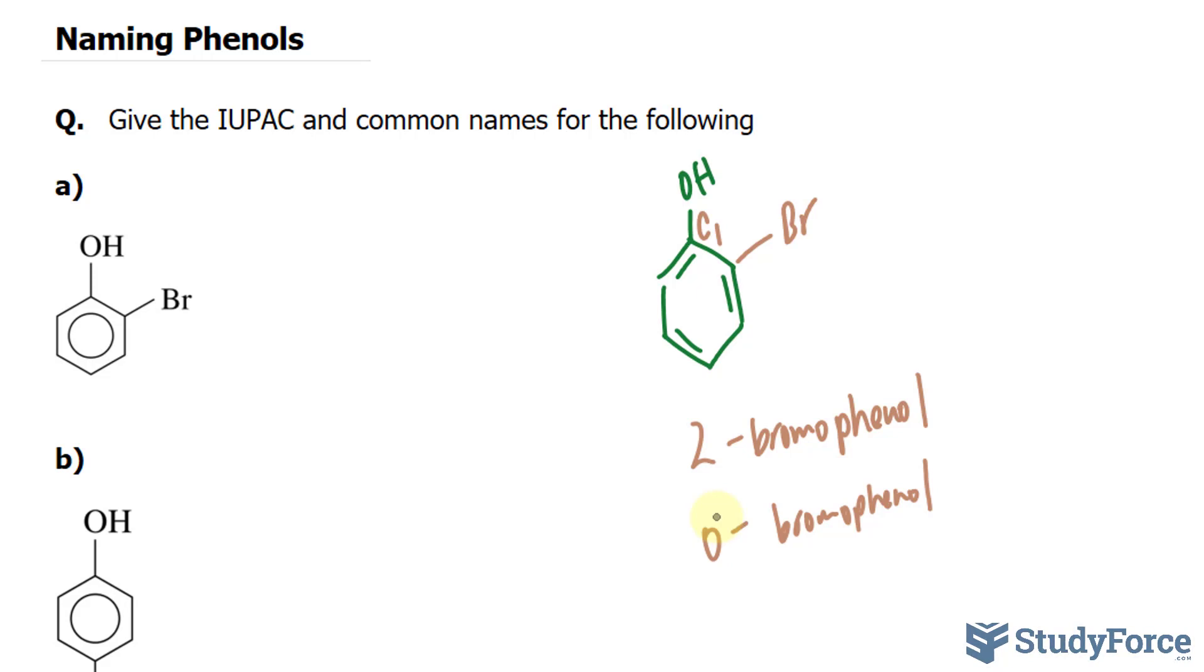When it's between 1 and 3, it's meta, and you write down M. And also, if it's at 1 and 4th position, then it's para, which you put a P instead of an O.